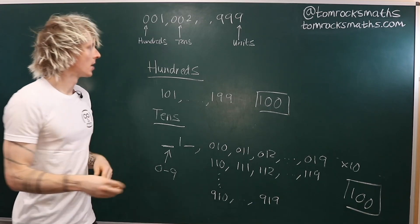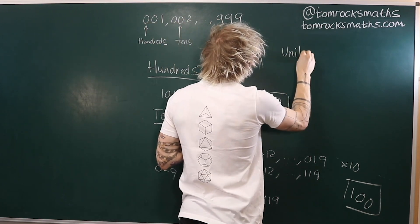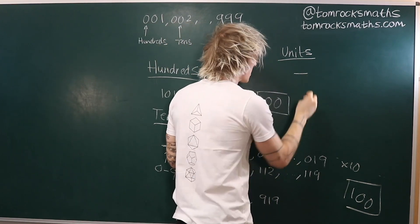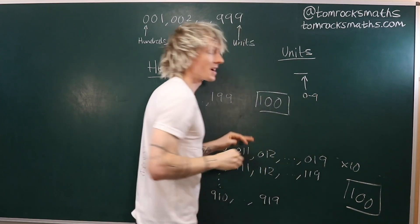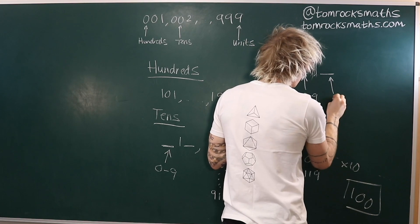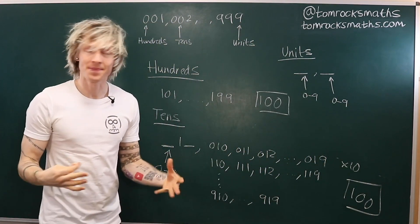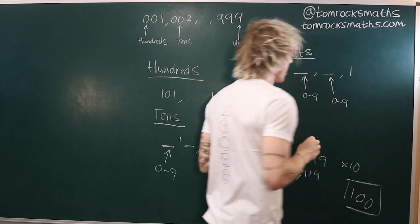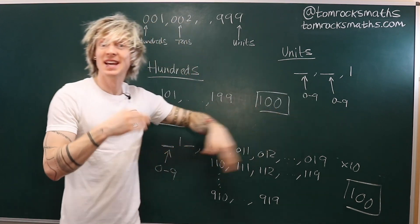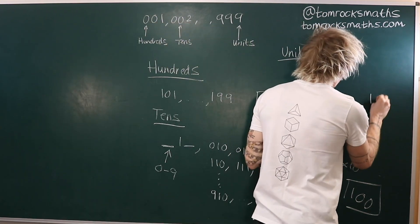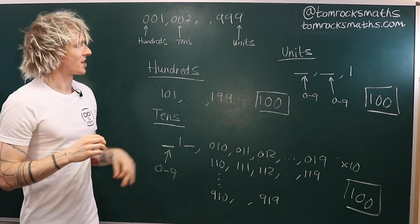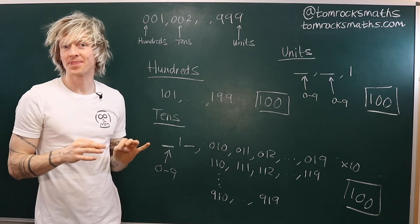For the units column, we can do this in a similar way. We don't mind what's in the hundreds position — that can be 0 through to 9. We don't mind what's in the tens position — again, 0 through to 9. And in the units position we must have a 1. So we have 10 choices times 10 choices, giving another 100 numbers with a 1 in the units column.